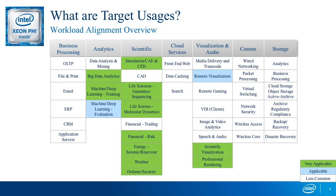The big decision is: is Knight's Landing the right compute capability for my application? Some applications are a good fit — those marked in green are where we have published proof points. In blue are applications where it's applicable but requires a lot more work. Everything white is basically where Xeon is the better choice.